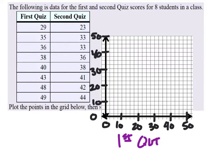And usually we would expect the second quiz to depend on the first one. So we'll say that the y-axis is quiz number two, or the second quiz.